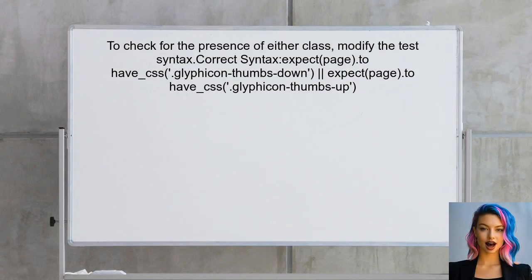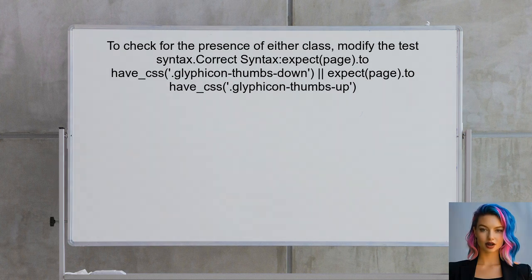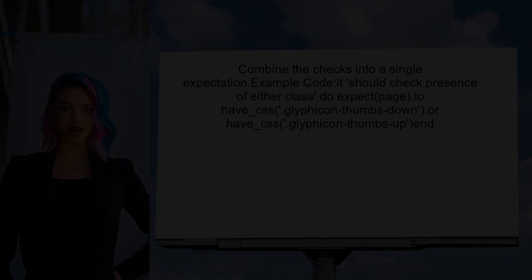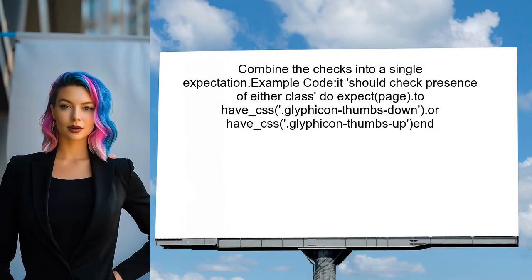To check for the presence of either class, the user should modify their test to use the correct syntax for RSpec and Capybara. Instead of using the logical OR operator, they should use the RSpec matcher `have_css` with a block. The user can combine the checks into a single expectation using the OR method provided by RSpec, which allows for a cleaner and more readable test.